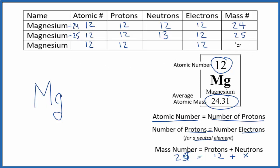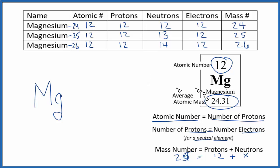For the last one, about 11% is magnesium with a mass number of 26. So 12 + 14 gives us 26, and this is magnesium-26. As you look at magnesium, the average atomic mass is the average of these mass numbers based on their abundance. There's a lot of magnesium-24, so it's closer to 24.